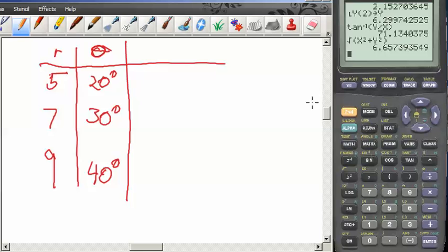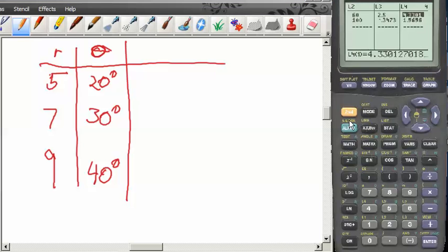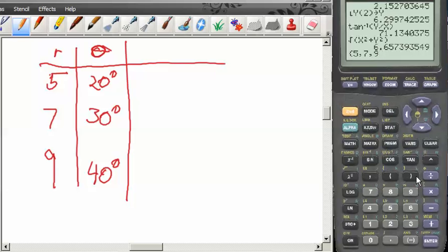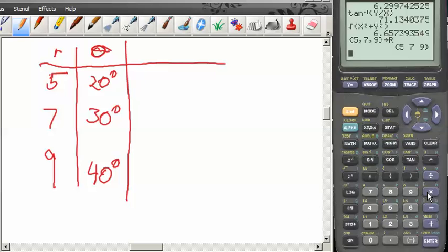Let's do one more example so that we can kind of do this without actually using that stat edit because not everybody has access to that. So I'm going to do it with just the lists. We're going to put in an r list five comma seven comma nine and I'm using the curly brackets here and I'm going to store that in alpha r.